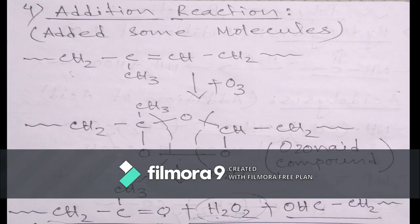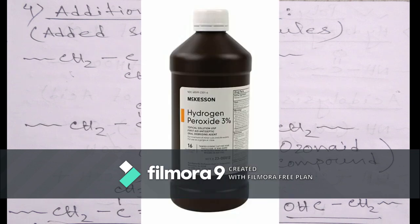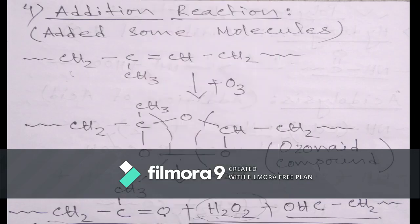This ozone structure is unstable, so it degrades and releases hydrogen peroxide and creates two different types of polymer chains. So here, by addition reaction, polyisoprene is degraded by the reaction of ozone.